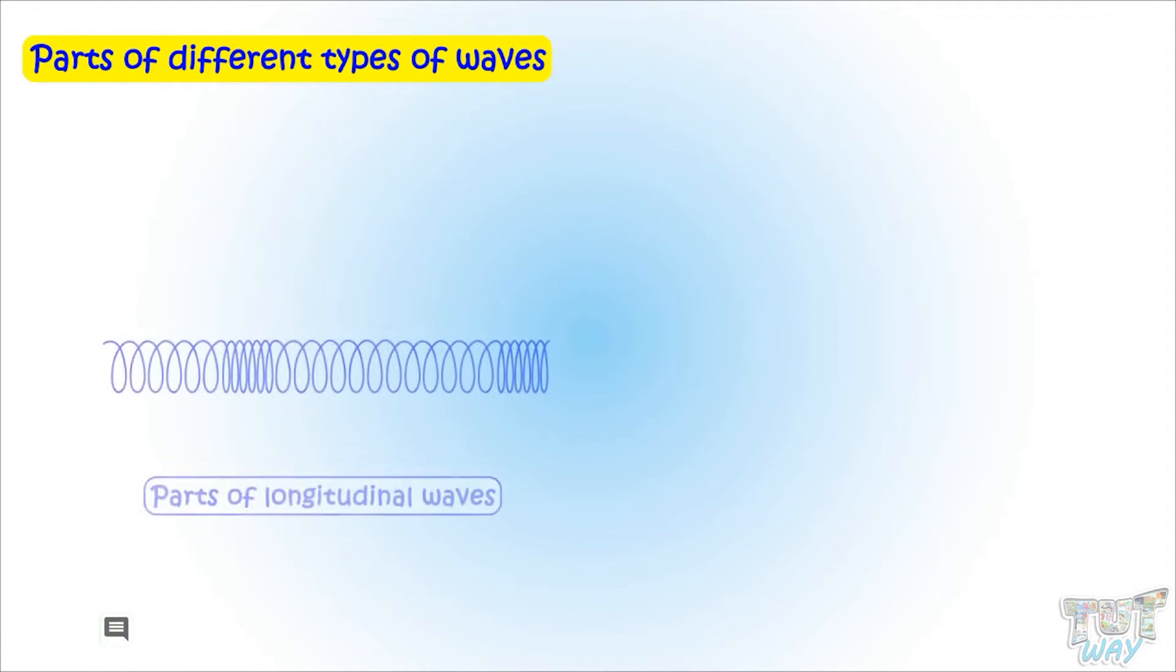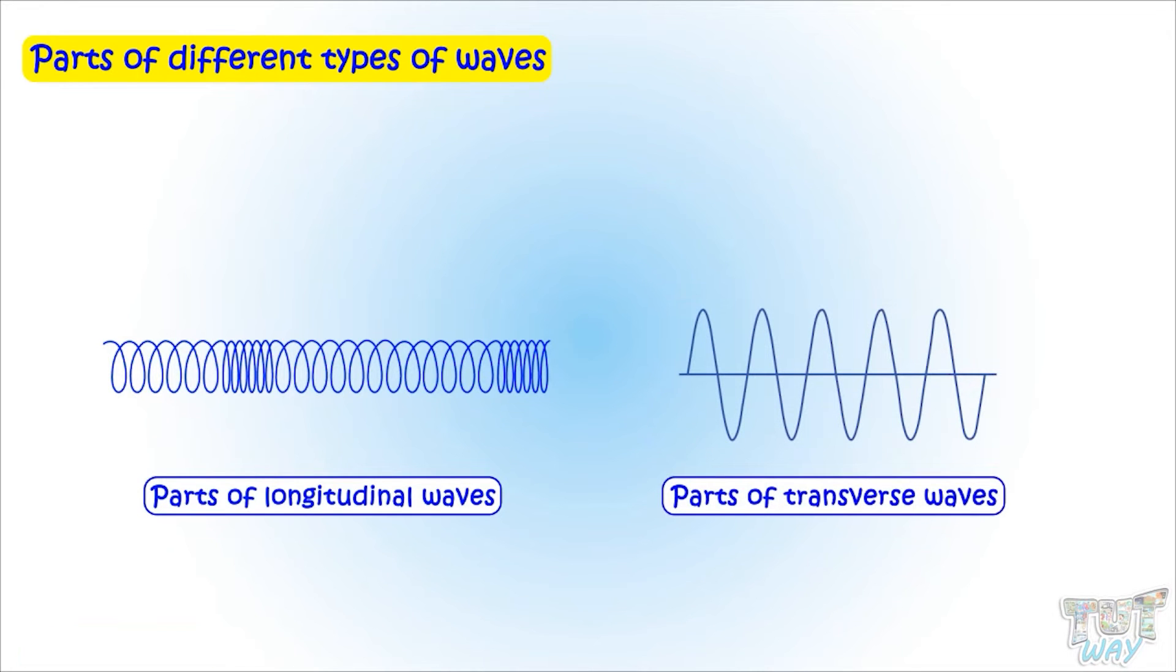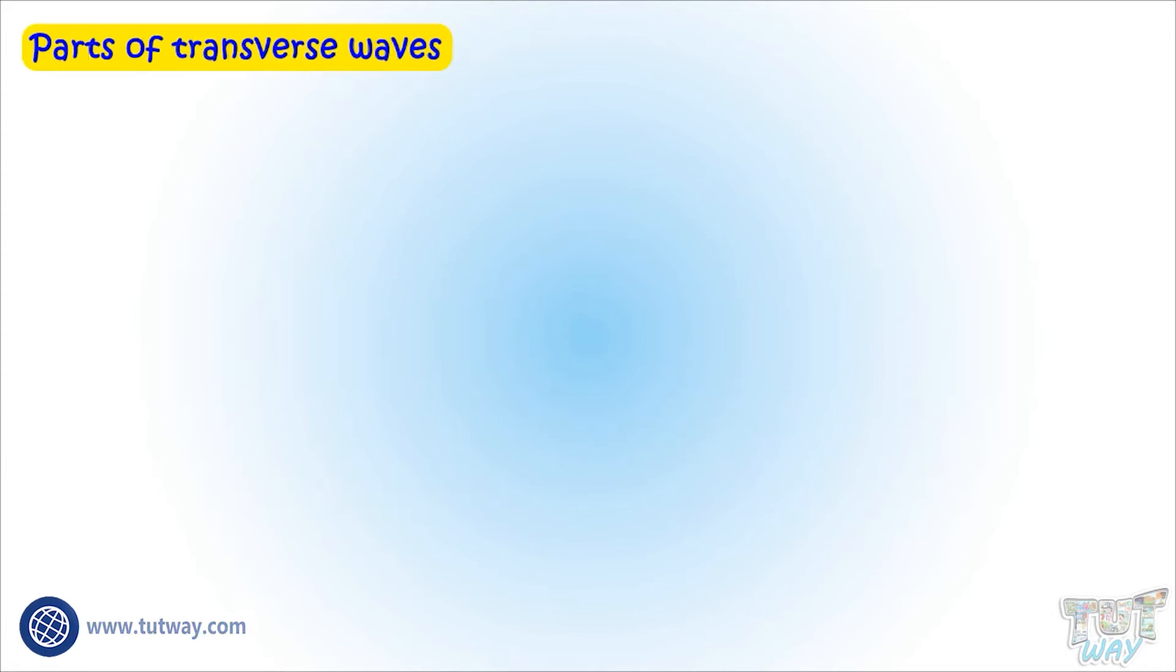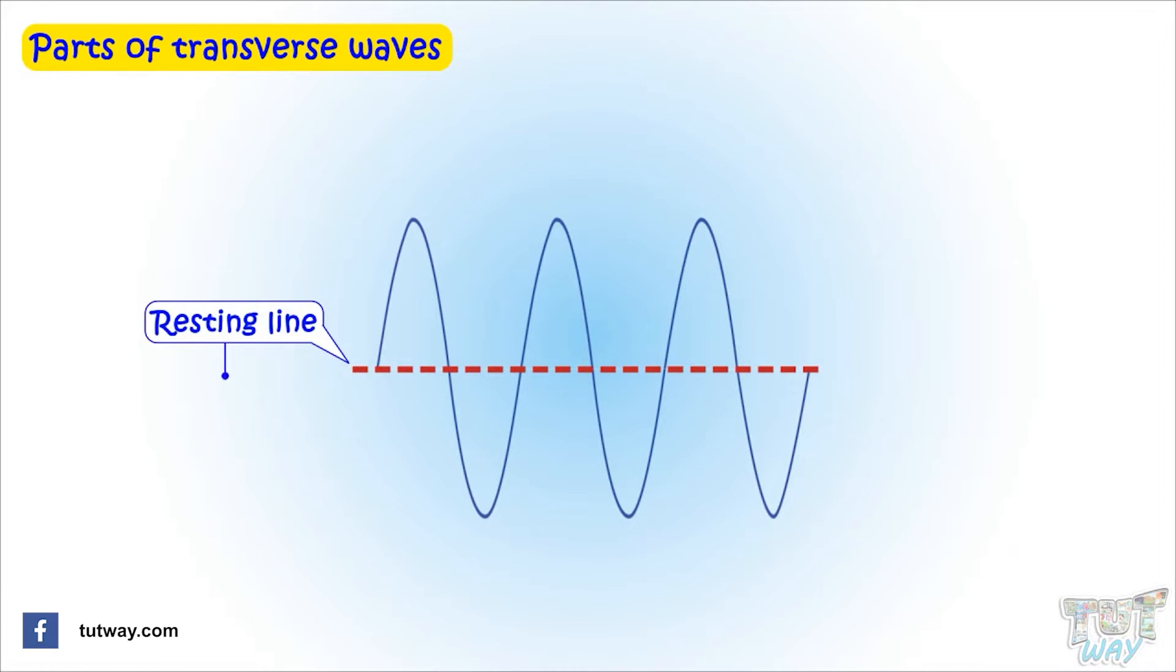Now we will learn parts of different types of waves: parts of longitudinal waves and parts of transverse waves. Let's first learn the parts of a transverse wave. First is the resting point. It is the line that runs in the middle of the wave. It divides the wave into two equal halves.